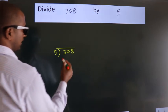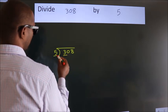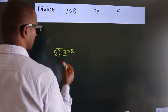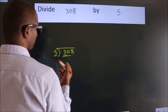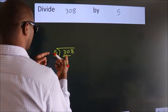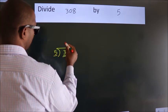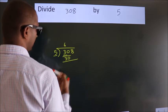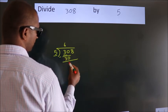Next. Here we have 3, here 5. 3 smaller than 5. So we should take 2 numbers, 30. When do we get 30? In 5 table, 5, 6, 30. Now we should subtract. We get 0.